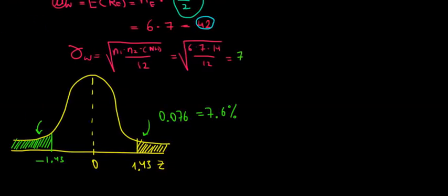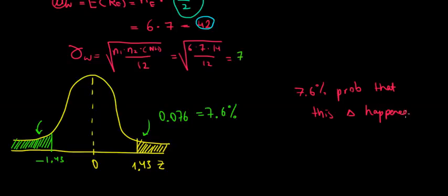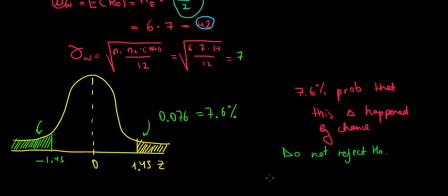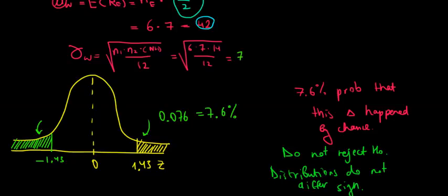We have a 7.6% probability that this difference occurred by chance. That's quite high — it's quite likely the difference happened by chance — so it's not sufficient evidence to reject the null hypothesis. We do not reject the null hypothesis, meaning the distributions do not differ significantly between Europe and the rest of the world.